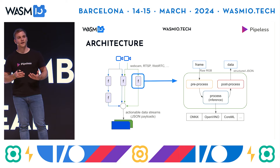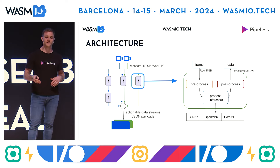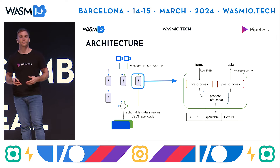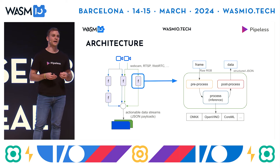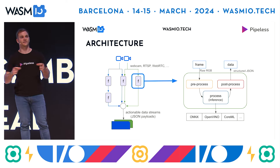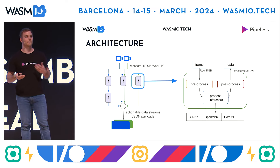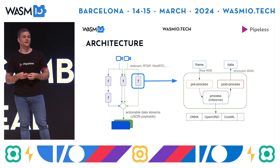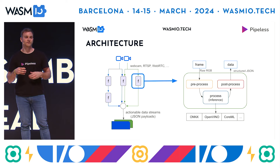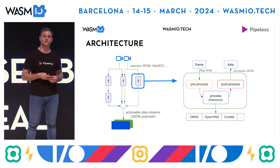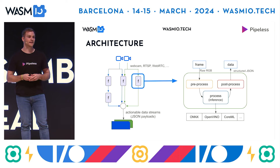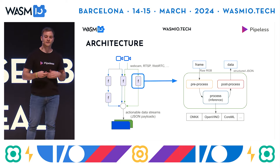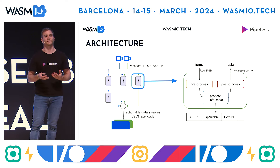How does Pipeless know what kind of data it has to extract from those video sources? Here is where filters come into play. For us, a filter has three main steps, just like in the architecture before. We have the pre-processing step, which is basically a function that receives a raw frame — that data array — and converts it into something that our model understands. Then we have a processing step, which can be a function or defined in JSON format, where you specify the inference runtime to use and which execution provider you want — like NVIDIA CUDA, TensorRT, OpenVINO, or whatever. And then the post-processing step, which is also a function that receives the processing output and converts that into structured data that you can easily work with later.